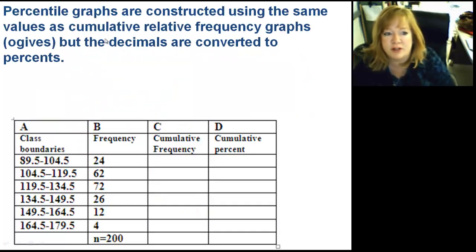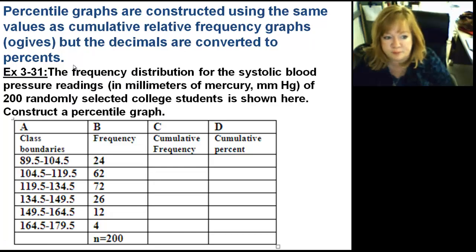Percentile graphs are constructed using the same values as cumulative frequency graphs, or ogives. So if you look back at your ogives, we're going to be doing the same thing, but the decimals are converted to percents. So just as a review, we're going to go ahead and do this one. The frequency distribution for the systolic blood pressure readings in millimeters of mercury of 200 selected college students are shown here. Construct a percentile graph.